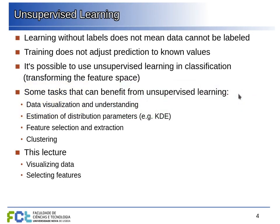We can use labeled data for unsupervised learning, but we are not trying to predict those values. It's possible to use unsupervised learning to help with classification by learning a better transformation of the data, but we can also do it for other purposes such as understanding data, visualizing it, estimating distributions, and clustering.